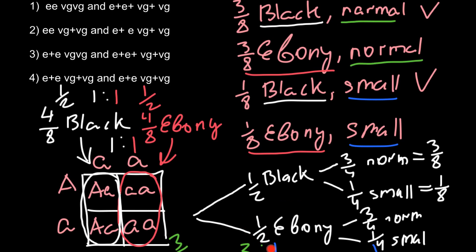For ebony flies: 3/4 will have normal wing size, so 1/2 × 3/4 = 3/8 — ebony with normal wings, check. And 1/4 out of the 50% ebony will have small wings, so 1/2 × 1/4 = 1/8 — ebony with small wings, check. All four phenotype frequencies are confirmed.